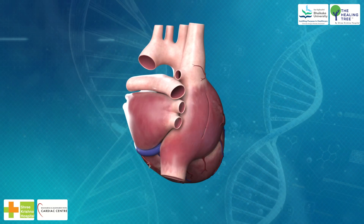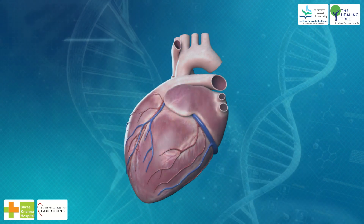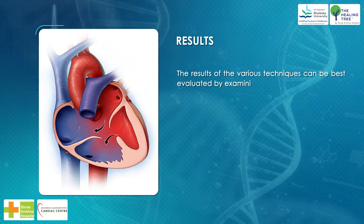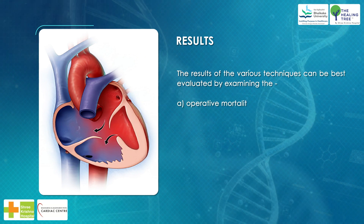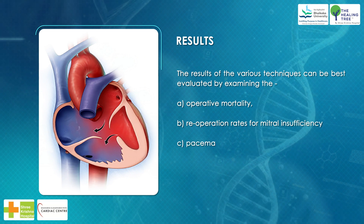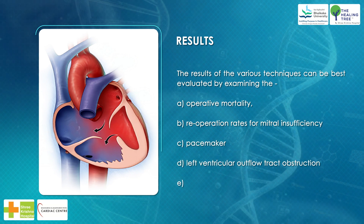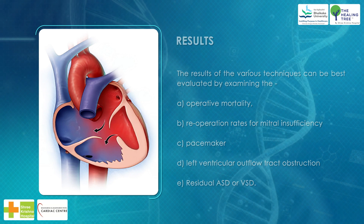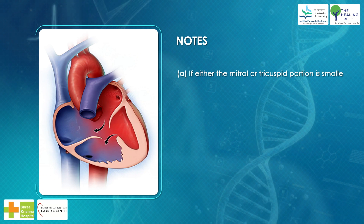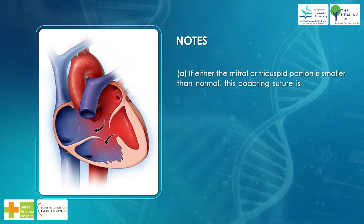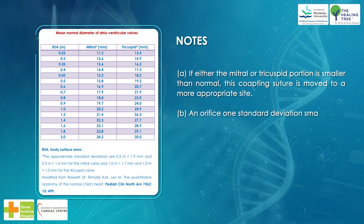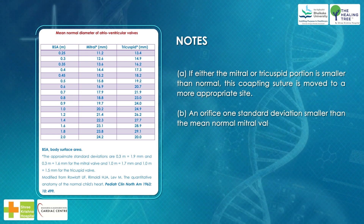Results of the various techniques can be best evaluated by examining: (A) operative mortality, (B) reoperation rates for mitral insufficiency, (C) pacemaker requirement, (D) left ventricular outflow tract obstruction, and (E) residual ASD or VSD. Notes: (A) if either the mitral or tricuspid portion is smaller than normal, the coaptation suture is moved to a more appropriate site; (B) an orifice one standard deviation smaller than the mean normal mitral valve is acceptable.